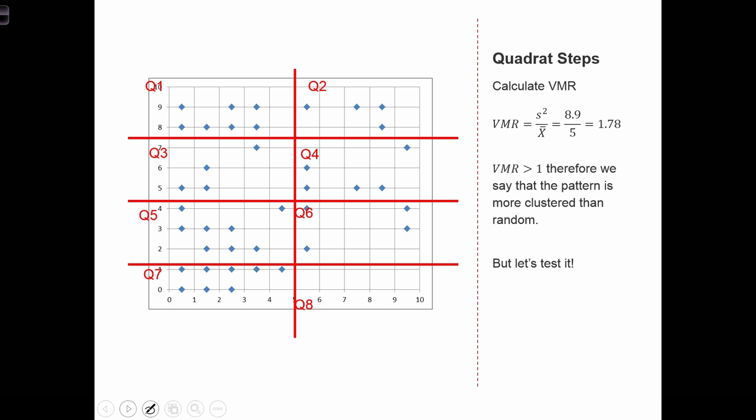Next we have to calculate the VMR, which is the variance to mean ratio. So it's 8.9 over 5, which equals 1.78. Now this VMR is greater than 1. And remember, when VMR equals 1, that's when the point pattern is random. If it's more than 1, that tells us that the point pattern is more clustered than random. But let's do a chi-square test to see if it's significantly different to 1. Is this VMR significantly greater than 1?